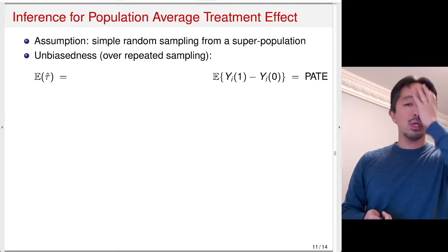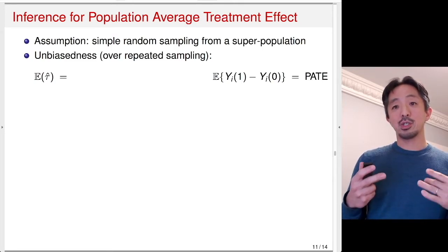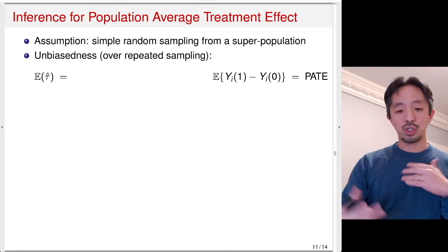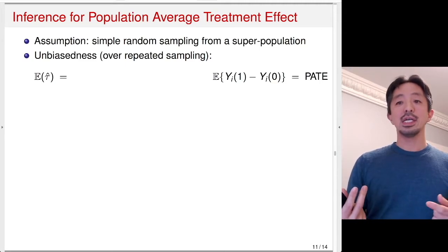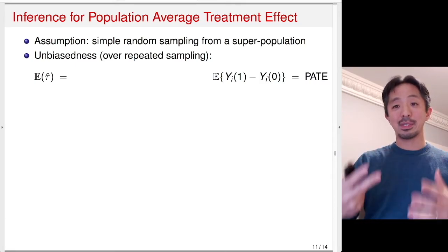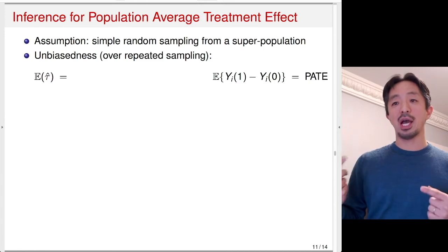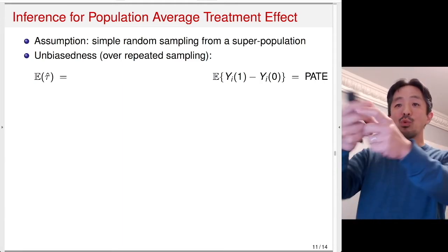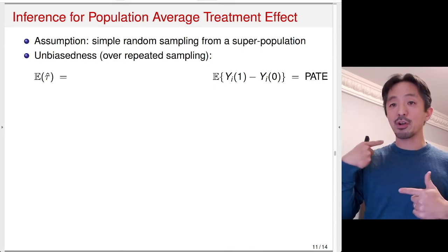The first thing we can show, like we did before, is unbiasedness. Now here there are two steps: we have over repeated sampling — simple random sampling — and then we have a treatment assignment that's also randomization. The hypothetical scenario is: suppose we first simple random sample from the population, then conduct random assignment of the treatment, compute the difference-in-means estimator, and repeat this process many, many times. Each time, we'll have a different sample and different units assigned to treatment, and we'll compute a slightly different difference-in-means estimate.